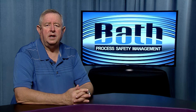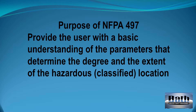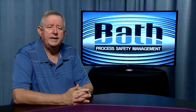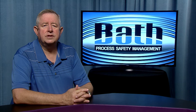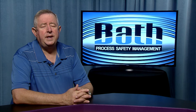Aside from the differences mentioned above, the purpose of these two documents is the same. The purpose of NFPA-497, as stated in Section 1.2 under the heading Purpose, is to provide the user with a basic understanding of the parameters that define the degree and extent of the hazardous classified location. This recommended practice also provides examples of the applications of these parameters, per Section 1.1.2 under scope, to allow classification into the groups established by NFPA-70, the National Electrical Code, known as the NEC, for proper selection of electrical equipment in hazardous classified locations.